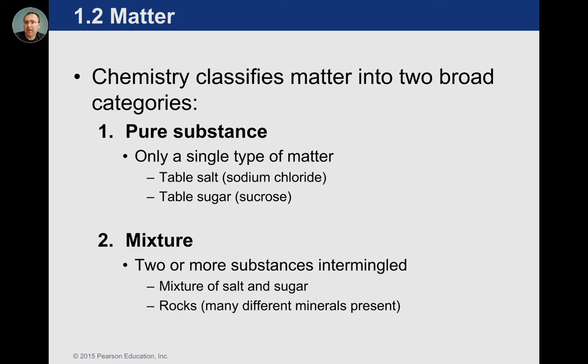Many metals are gray and many compounds are white. That's one of the disadvantages in the criminal justice system — if you have a white powder, maybe it's not sugar; maybe it's cocaine or methamphetamine or something of that nature. Pure substances are going to be difficult to recognize visually because they look very similar to elements in some cases. Some might be white, yellow, or gray, but it could be things mixed together that cause that color. That's something we have to worry about as we start to practice types of matter.